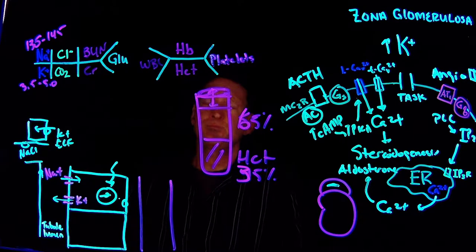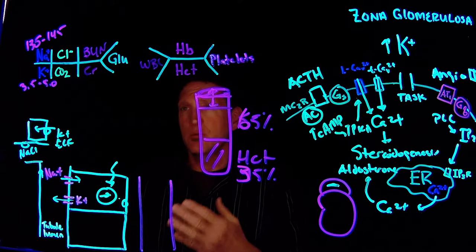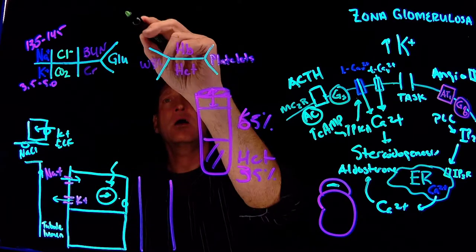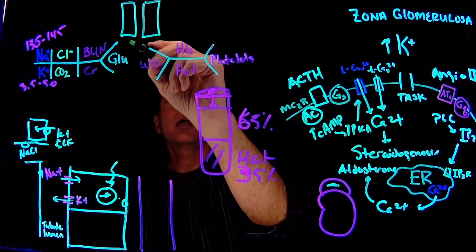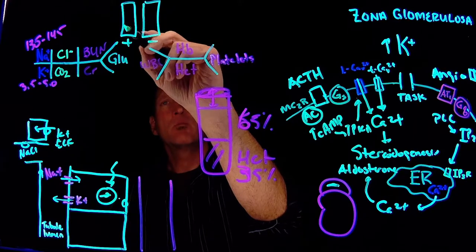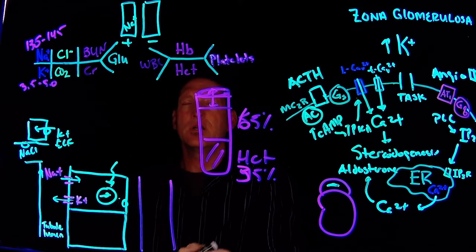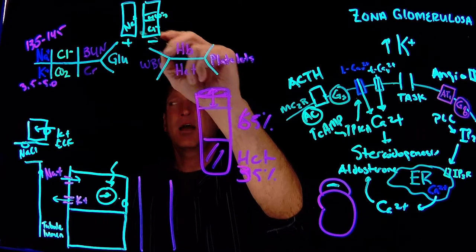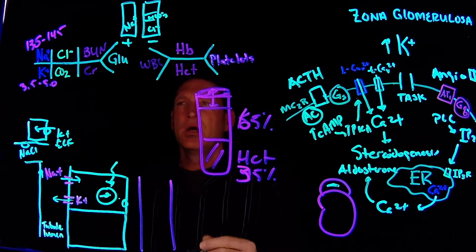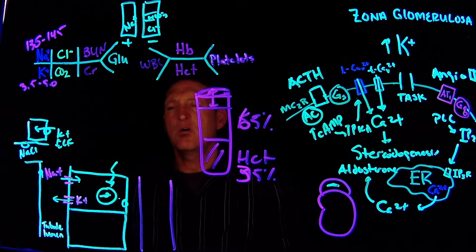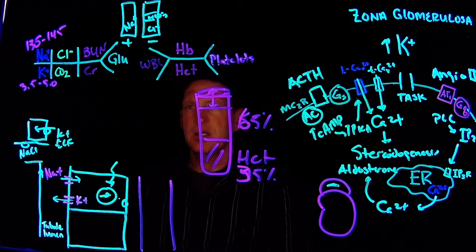Chloride ion trends with sodium — when sodium goes up, chloride goes up; when sodium goes down, chloride goes down — because we're maintaining electrical neutrality. Always get a measurement of the anion gap: positive charges are primarily sodium in the extracellular fluid, balanced by chloride and bicarbonate, with the remainder being the anion gap. Chloride trends with sodium primarily because of co-reabsorption with sodium in the kidney tubule lumen.